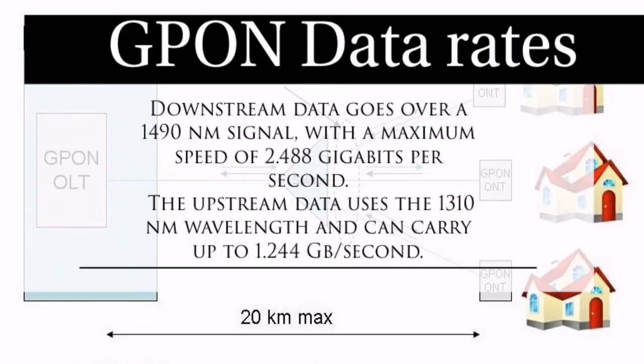G-PON data rates are 1.244 Gbps for upstream and 2.488 Gbps for downstream. This is important from an interview perspective, and all these notes are available in this video.